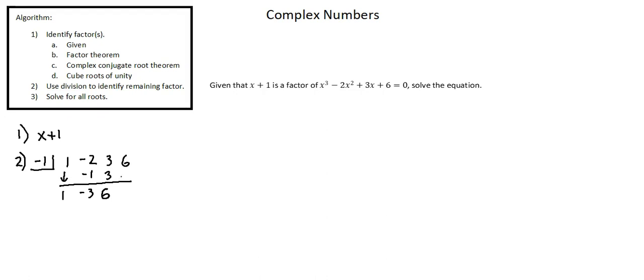Again, multiplying negative 1 times 6 is negative 6. Summing 6 minus 6 equals 0.